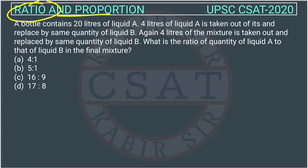This is the question of ratio and proportion asked by UPSC in CSAT paper of 2020. A bottle contains 20 liters of liquid A. 4 liters of liquid A is taken out of it and replaced by same quantity of liquid B.